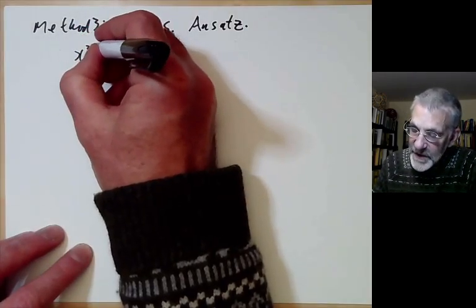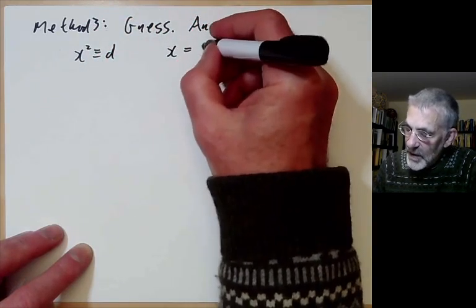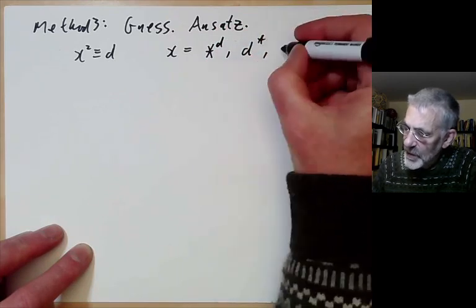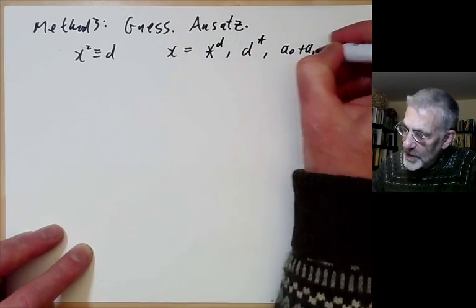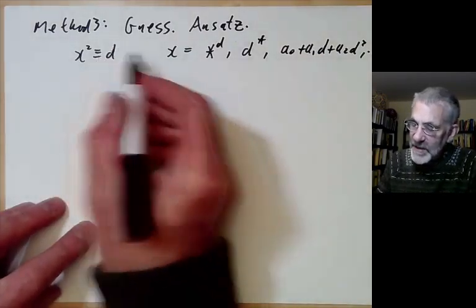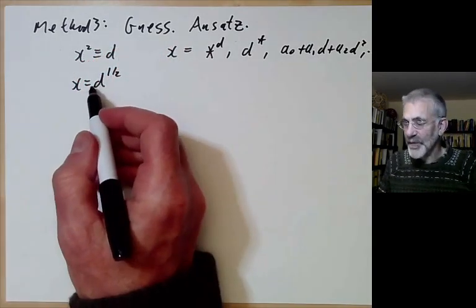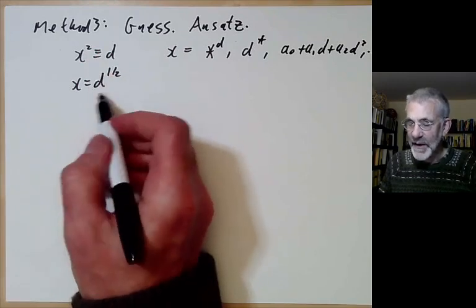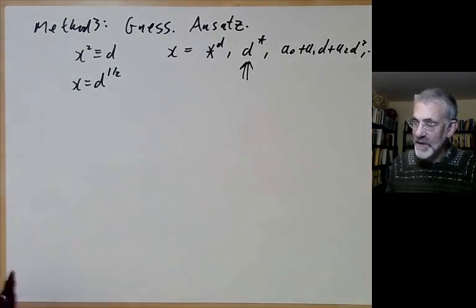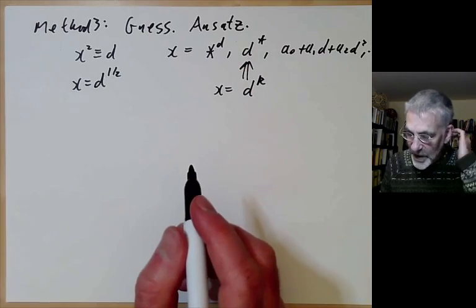To solve x² ≡ d, we try x equal to some function of d — for instance, something to the power of d, or d to the power of something, or a₀ + a₁d + a₂d² + ... Since x = d^(1/2), we want an Ansatz that looks like d to the power of something. So let's try x = d^k for some integer k and figure out what k is.